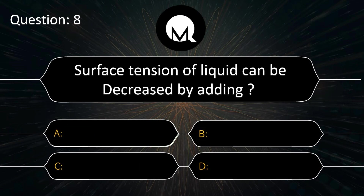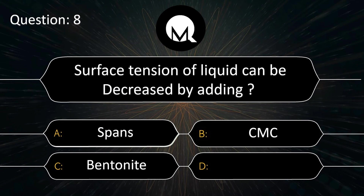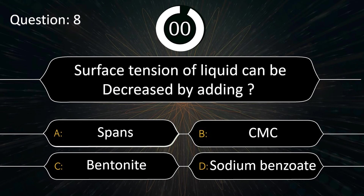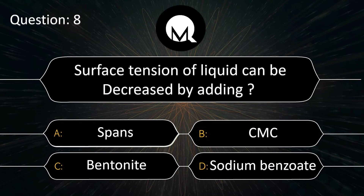Surface tension of a liquid can be decreased by adding: spans, CMC, bentonite, or sodium benzoate? Answer is spans.